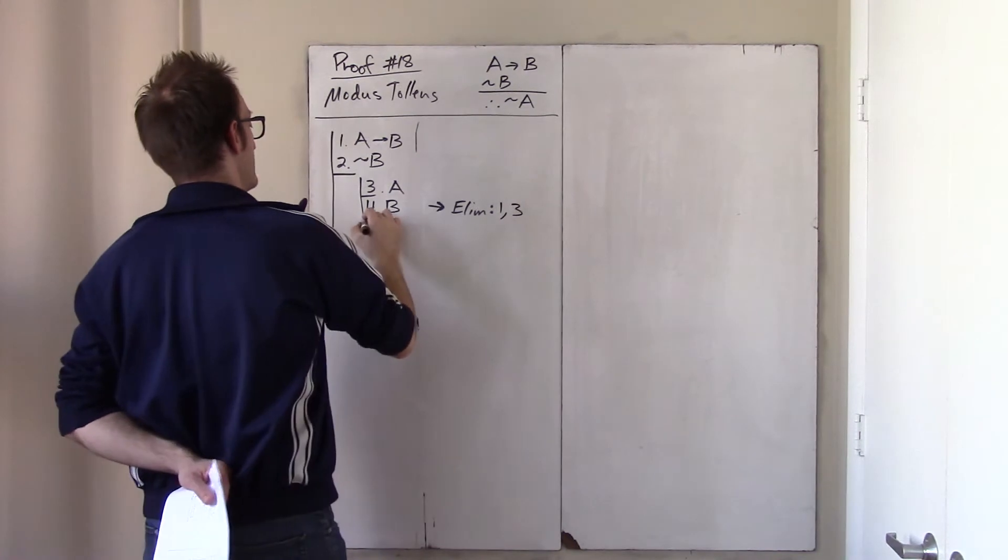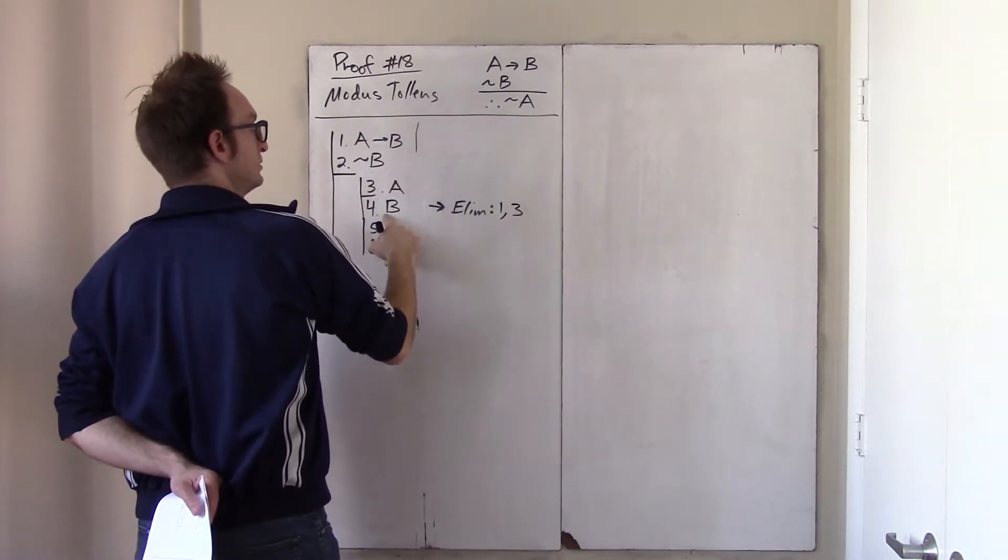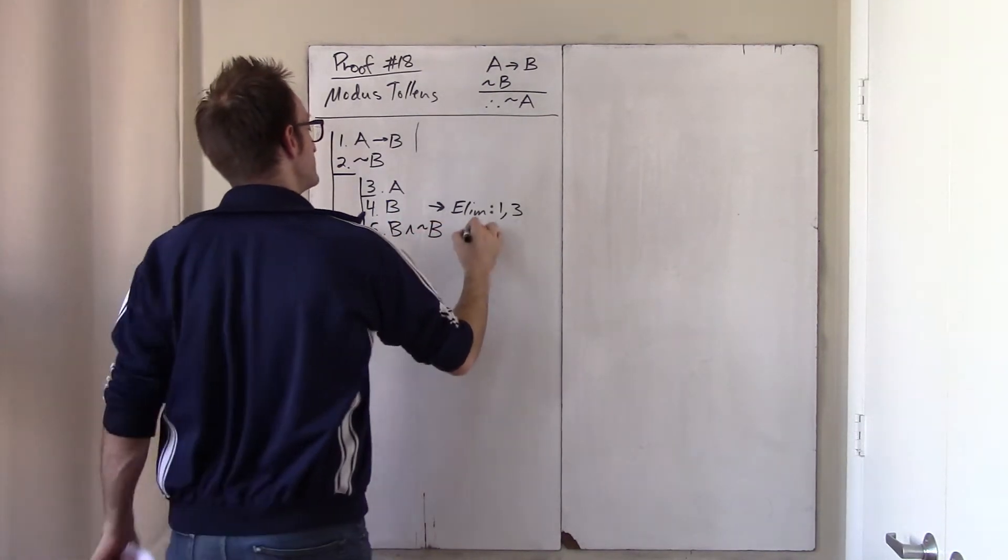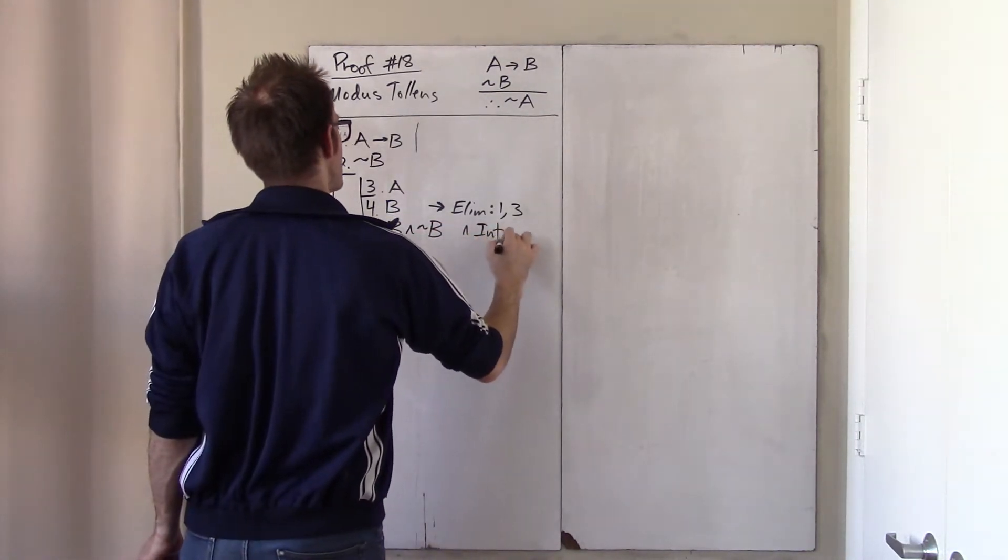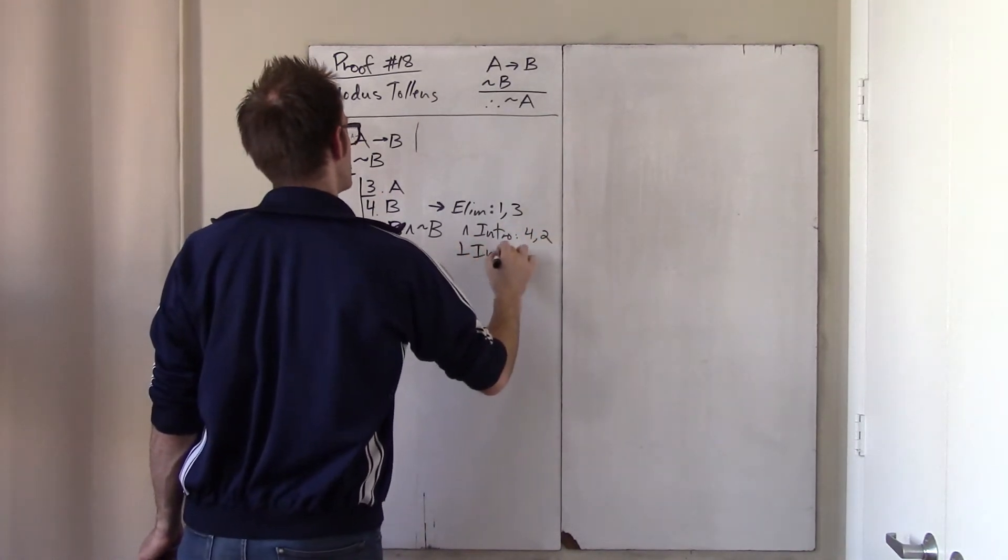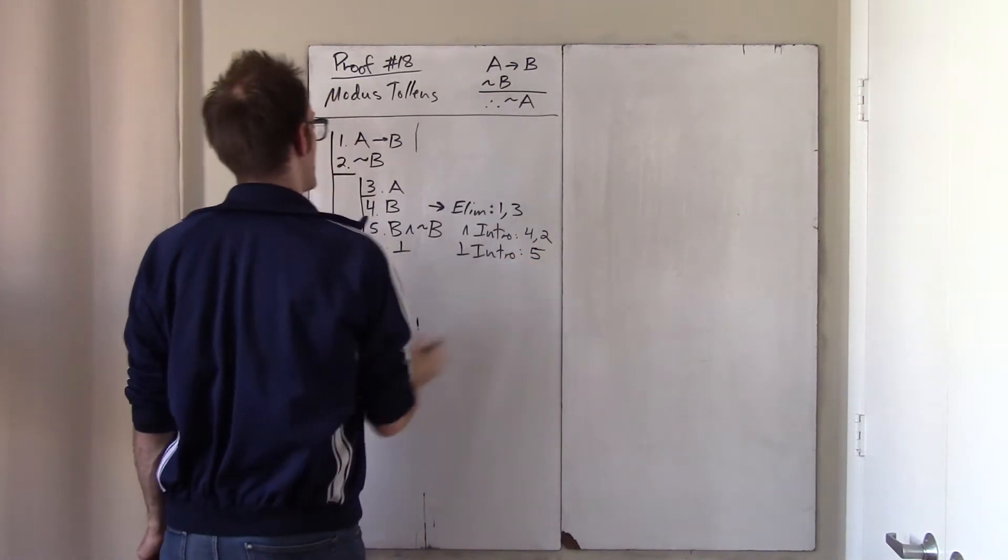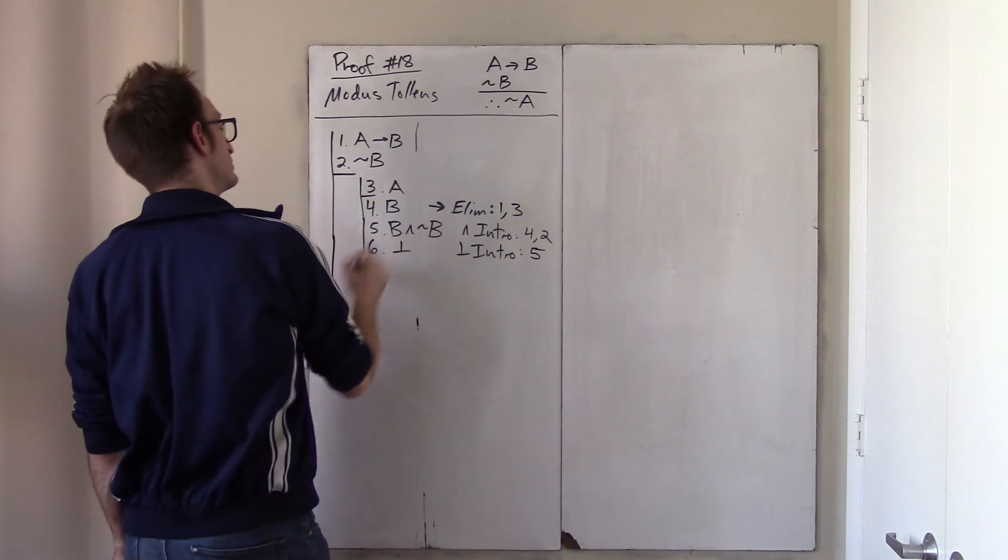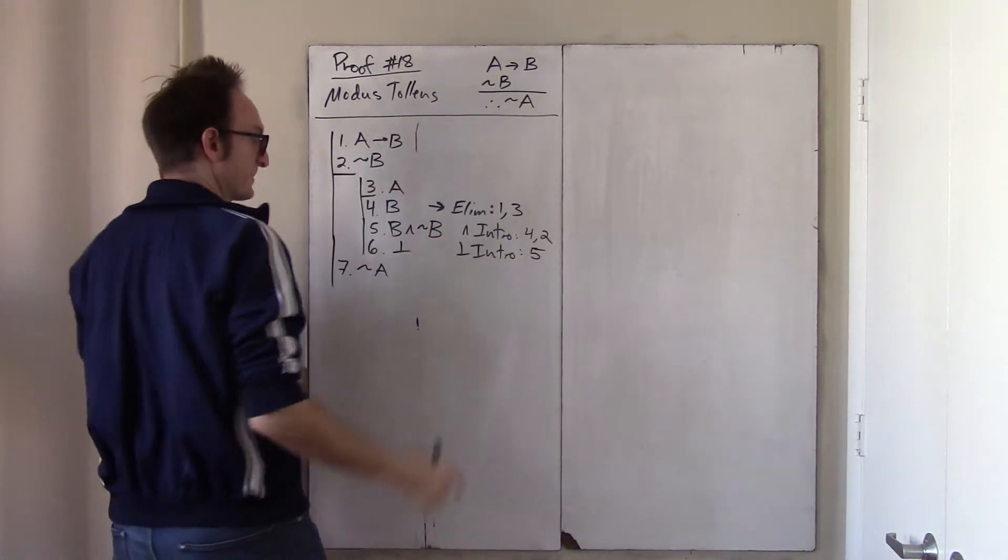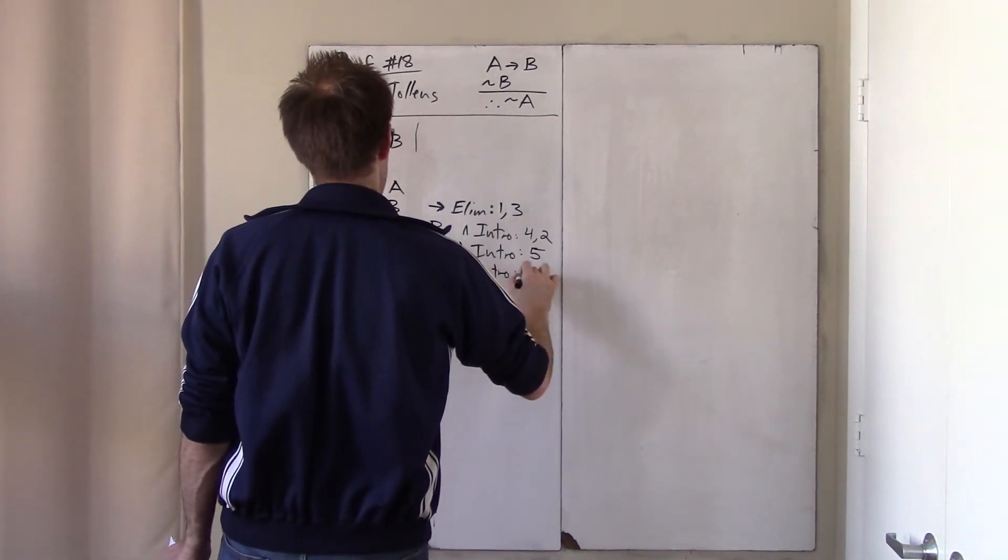And this is just 1, 3. Okay, good. But immediately we have a problem, because together with line two, this B just can't be. So we have B and not B, and intro 4, 2. That is a contradiction. Bottom intro 5, and therefore this thing we assumed in line 3 is just not true. In fact, the negation is true. Reason negation intro 3 through 6.